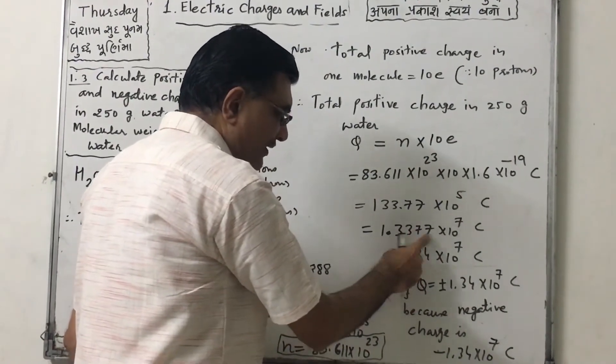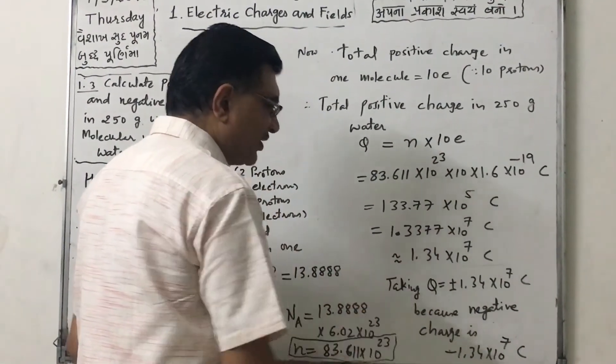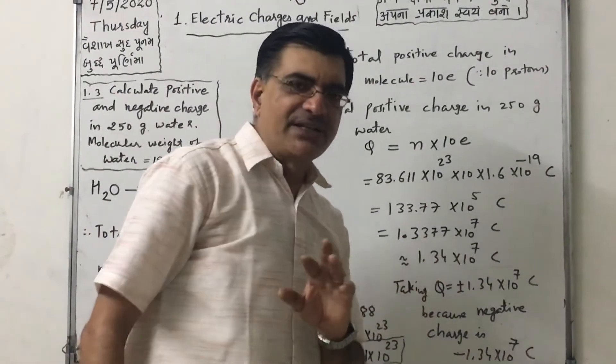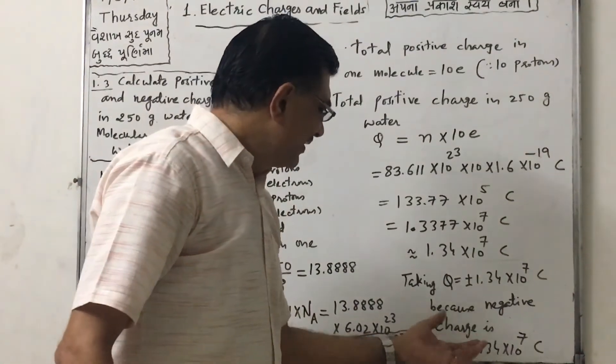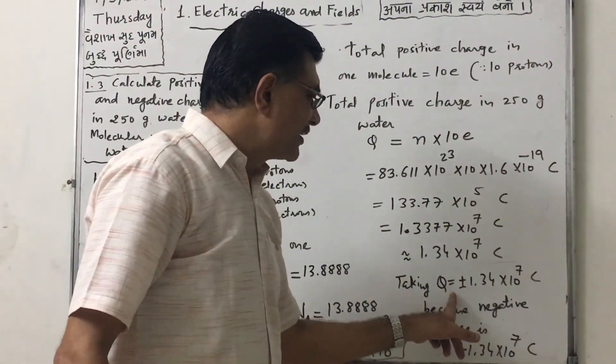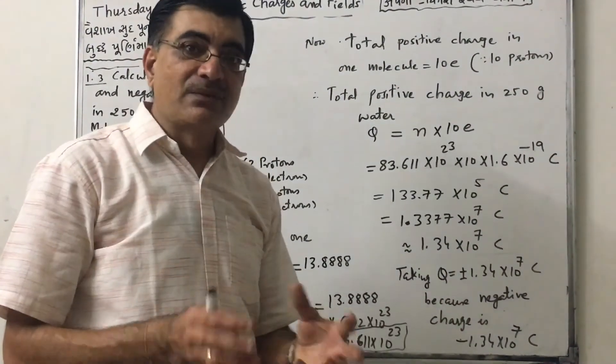Removing this 7. So positive charge is 1.34 into 10 raise to 7 Coulomb approximately. Same is negative charge. So we can write in textbook they have written as plus or minus. The net sum will be 0.